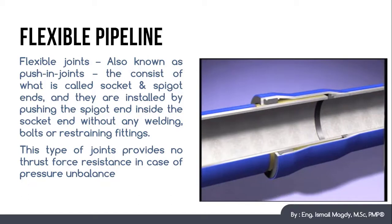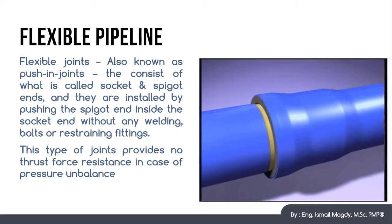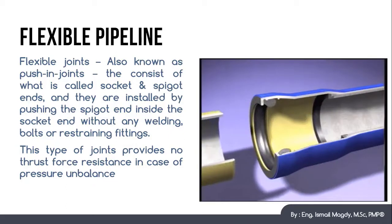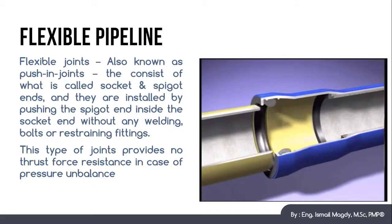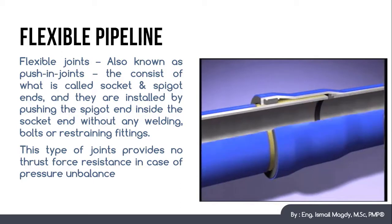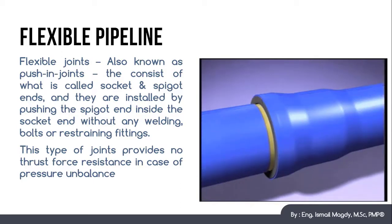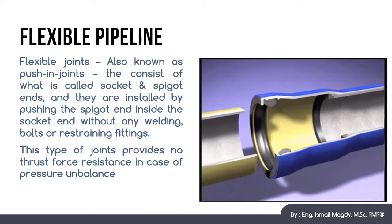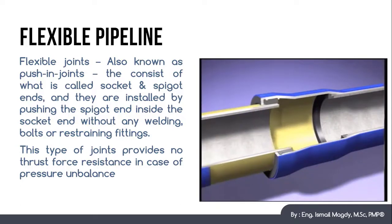Flexible pipes, also known as push-in joints, are as shown in this photo here. They consist of socket and spigot ends, and they are attached together just by pushing the spigot end inside another socket end. There are no additional welding or fixation methods between the pipes. Hence, this type of joint provides no resistance against thrust force.